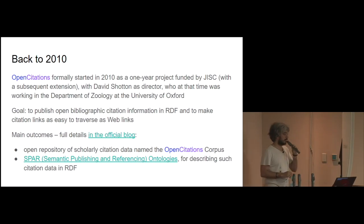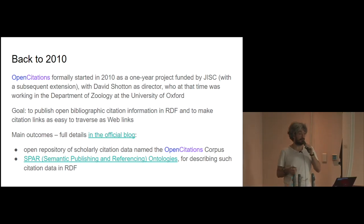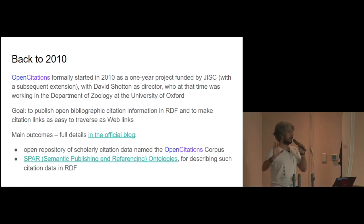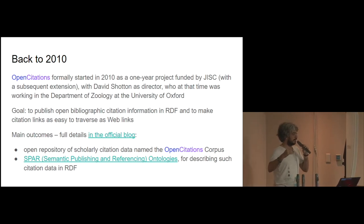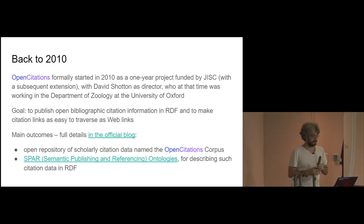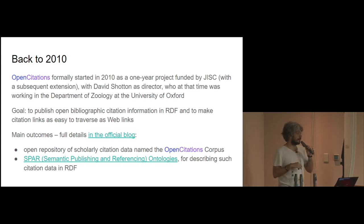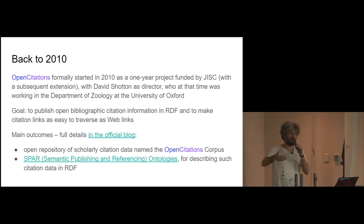OpenCitation actually started in 2010 after a one-year project founded by JISC and was run by David Shotton as director when he was at the Department of Zoology in Oxford. The goal was to publish OpenCitation data in RDF, in structured format, in order to make them available openly. The outcomes of this project were mainly two: the first one is the release of the OpenCitation corpus, and the second one was the development of the SPARQL ontologies that have been used for describing this OpenCitation data.